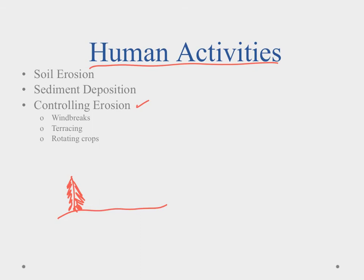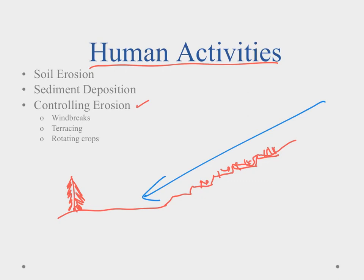We can also terrace a mountainside — leveling it into steps where plants grow. Water going down fills each terrace and trickles slowly over, rather than whooshing down and taking away soil. Finally, we can rotate crops: putting in crops that replenish soil nutrients, then using crops that use those nutrients up, then going back to replenish. That's it for our video on soil — just a quick introduction; the lesson will give you more detail.